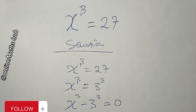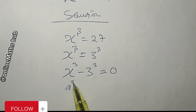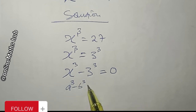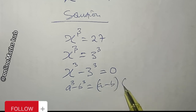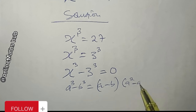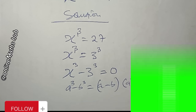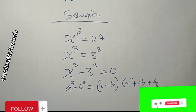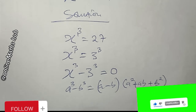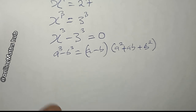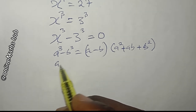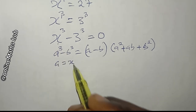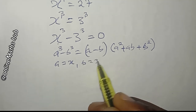If you remember this expansion: a³ minus b³ can be expanded as (a minus b) multiplied by (a² + ab + b²). This is how you expand the difference of two cubes. Applying this here, a is equal to x and b is equal to 3.